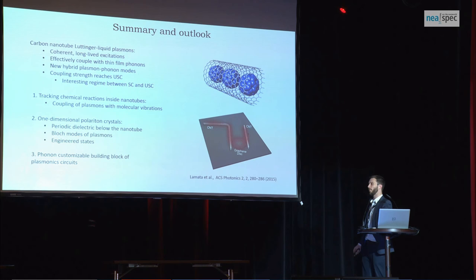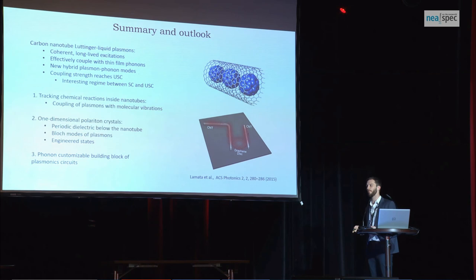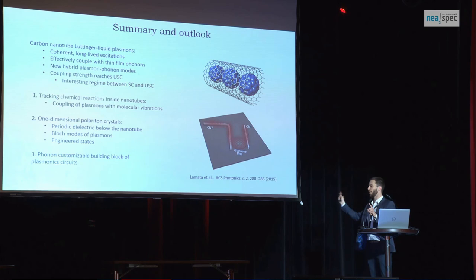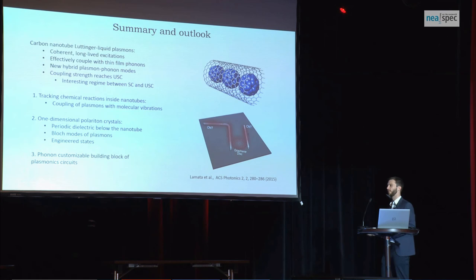This can lead to multiple potential applications. We want to use these plasmons to track different molecules inside the nanotubes — because the nanotubes are cylinders, we can put small molecules inside and do chemical reactions with them. Tracking these reactions is really cumbersome, but if the plasmons couple to the molecular vibrations and show enhanced signatures, it would be easy to track the products. One could also make one-dimensional polariton crystals or plasmon crystals by varying the underlying substrate. Carbon nanotubes are also very promising candidates for plasmonic electronics, and we showed that the phonons of the substrate can give extra customizability to these building blocks.